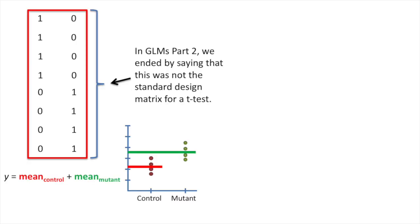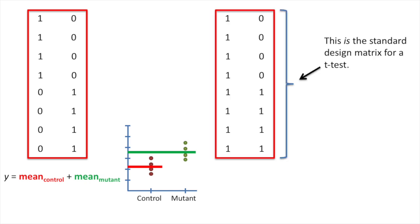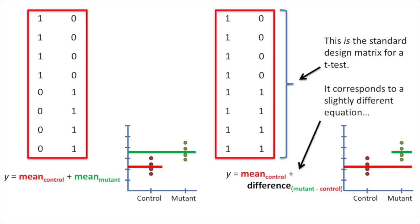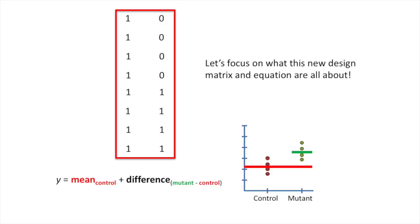In part two of this series, we ended by saying that the design matrix shown was not the standard design matrix for a t-test — it was kind of a cliffhanger. Then I showed you that this is the standard design matrix for a t-test. It corresponds to a slightly different equation. Let's focus on what this new design matrix and equation are all about.